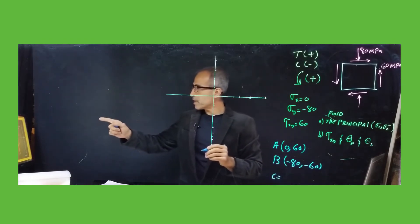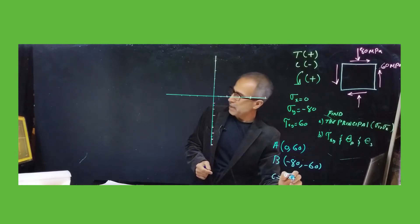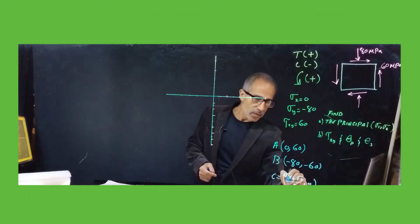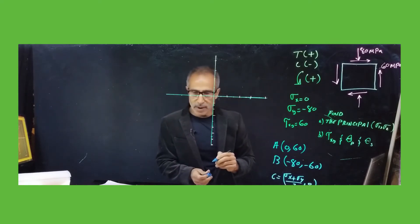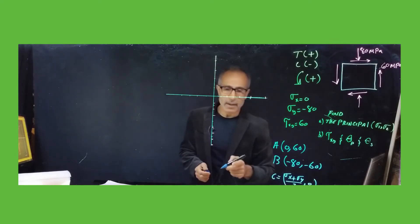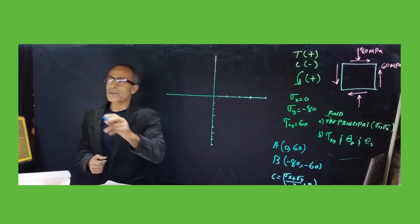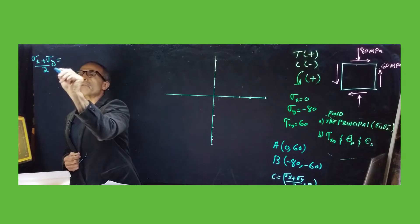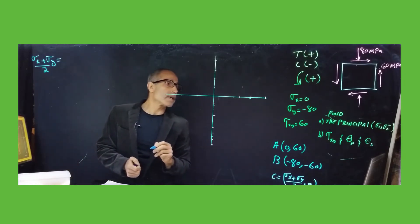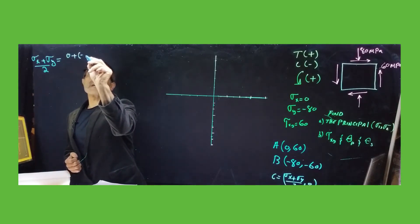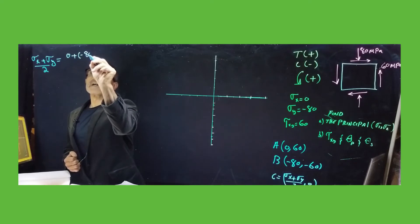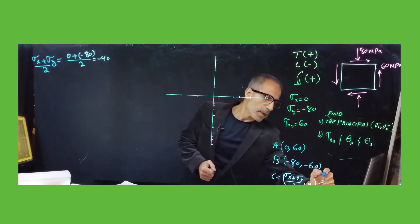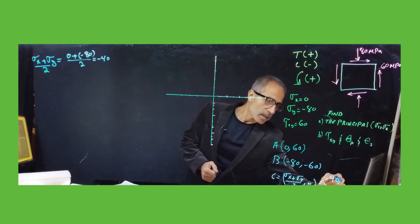The center of the circle is at (sigma x plus sigma y) divided by 2, and zero. So that's (0 plus (−80)) divided by 2, which comes out to minus 40. Our center on the circle is at (−40, 0).